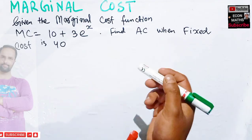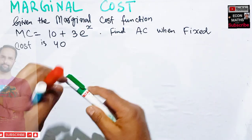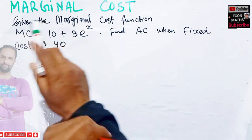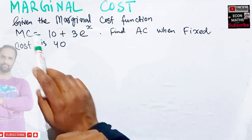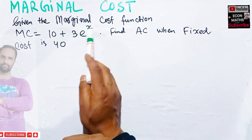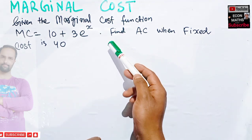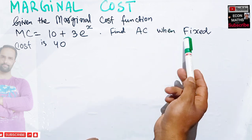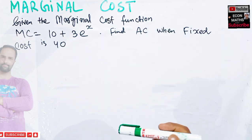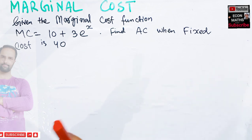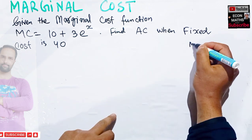In this video we will try to solve a question on how to find average cost from the marginal cost function. The question is: given the marginal cost function MC = 10 + 3e^x, where x denotes the output, we have to find out the average cost when the fixed cost is 40.